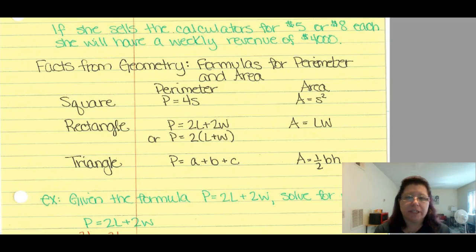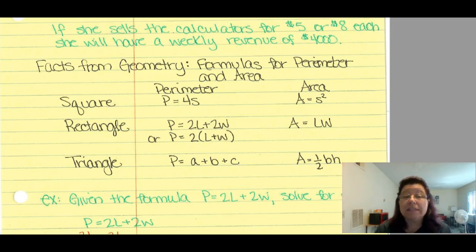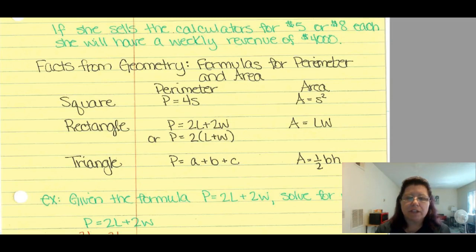Now let's cover geometry formulas for the three most popular shapes. For a square: perimeter P = 4s, area A = s². For a rectangle: perimeter P = 2l + 2w, area A = l × w. For a triangle: perimeter = a + b + c, and area = (1/2) × base × height. These are all formulas because they have more than one variable.